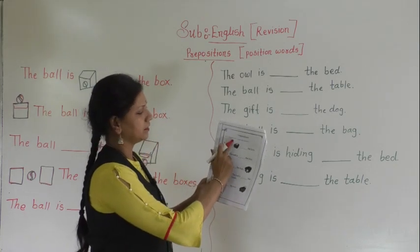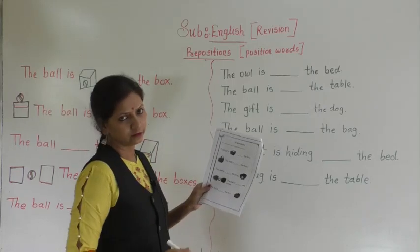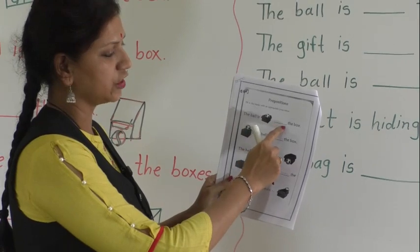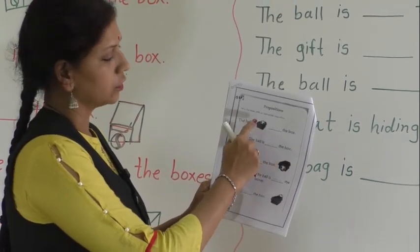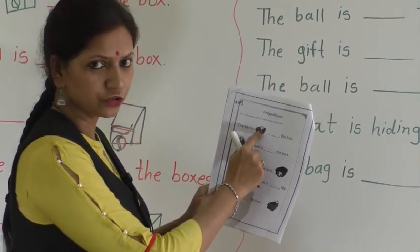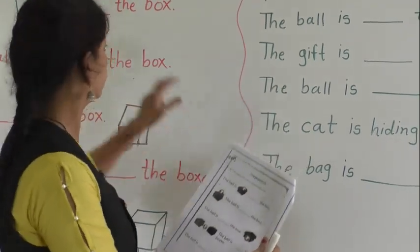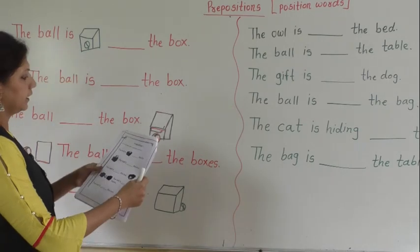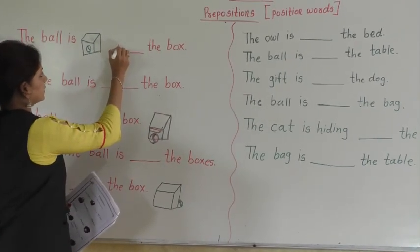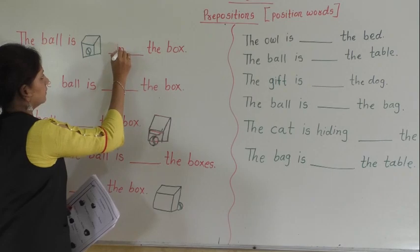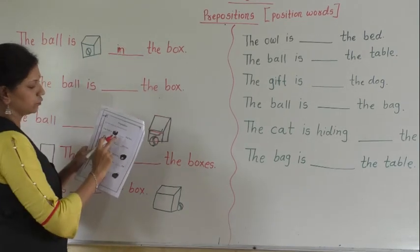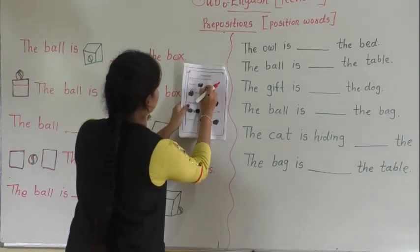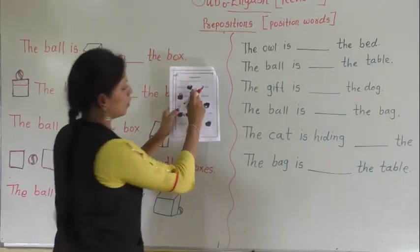Fill in the blanks with an appropriate preposition. The first sentence is: the ball is dash the box. You have to check the position of the ball, where the ball is. You can see here the ball is in the box. So the right answer is in the box. Here you write down: in the box.